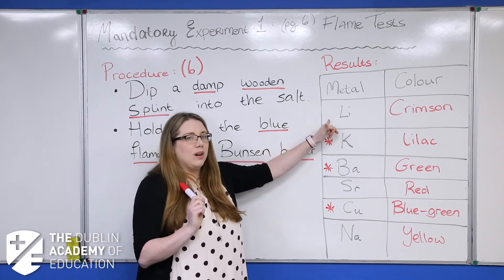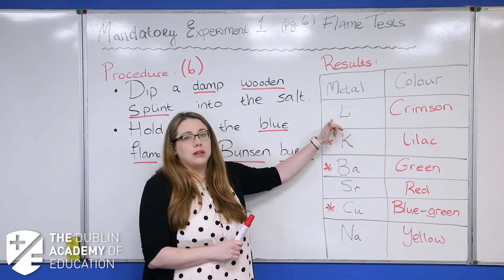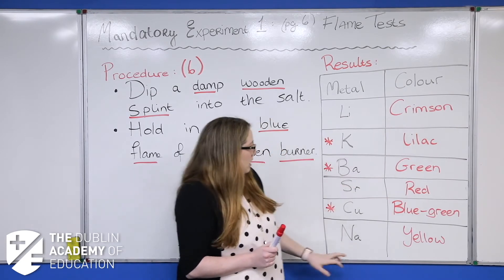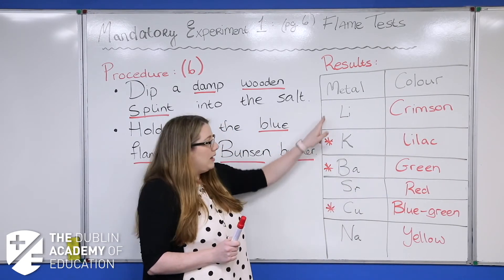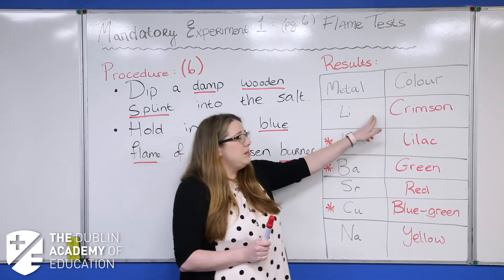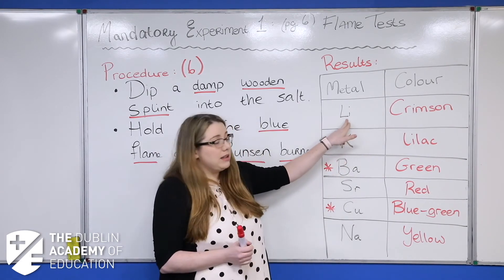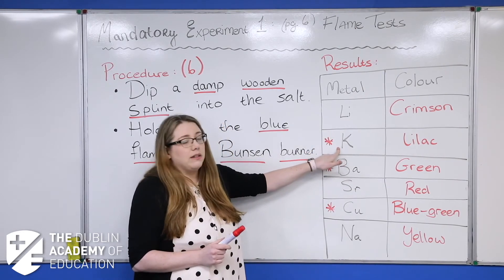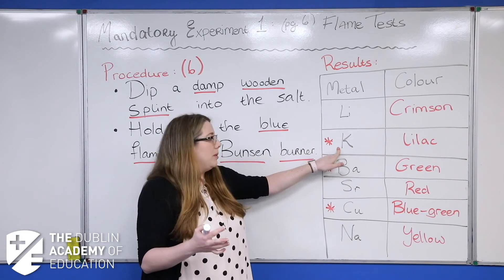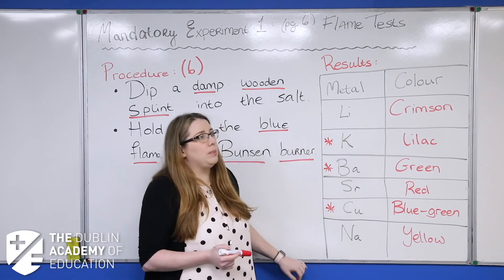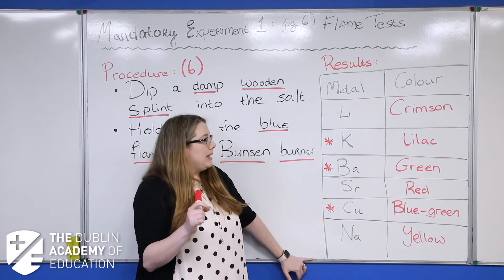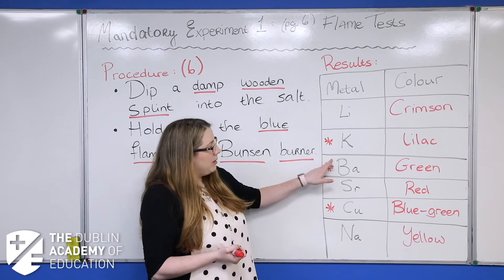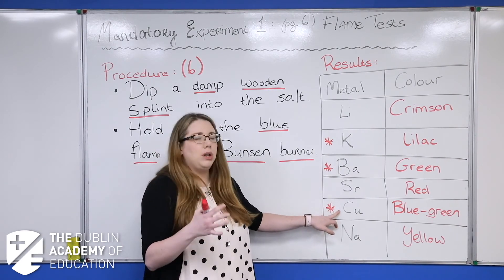Be careful with your language in describing the colours. Lithium burns with a crimson flame, not red — because strontium is red, and they look very different when you burn them side by side. Crimson is more of a pink, so don't say lithium burns with a red flame because it's wrong. Potassium burns with a lilac flame, so it's a really pale purple one. Barium is green, strontium is red, and copper is like a blue-green — it's a mixture of both.